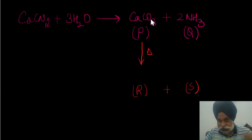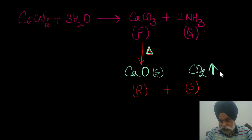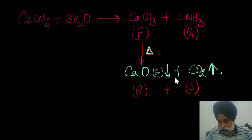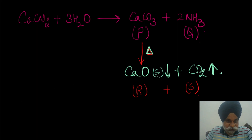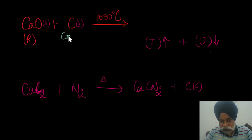Moving to the next step: calcium carbonate is heated strongly to give calcium oxide as a solid residue — shown by the downward arrow — and carbon dioxide gas which escapes — shown by the upward arrow. This is a straightforward thermal decomposition: CaCO₃ → CaO + CO₂.